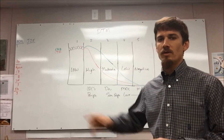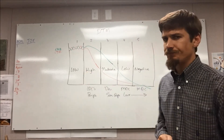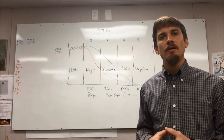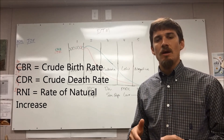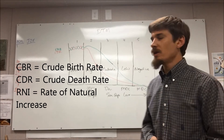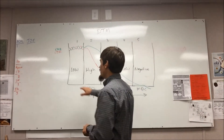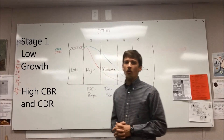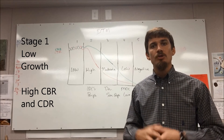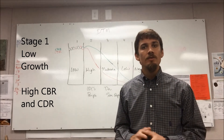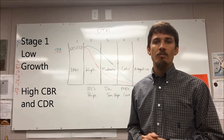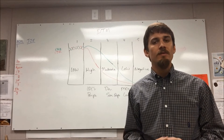We have five different stages. Starting with stage one, the characteristics we're really going to highlight are the birth rate, the death rate, and the population growth rate — also called the rate of natural increase. Stage one is characterized by a very low population growth rate, meaning the population is growing very slowly, because this is a very primitive society where both birth rates and death rates are very high.